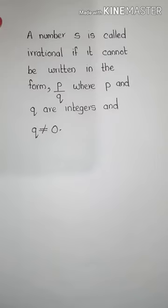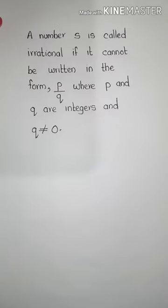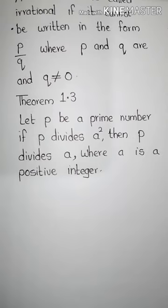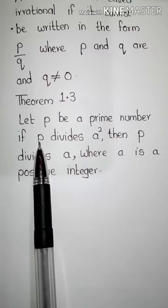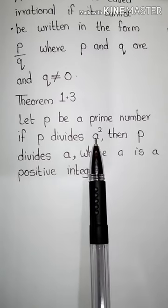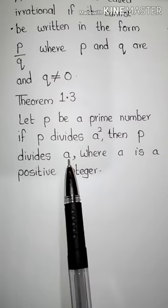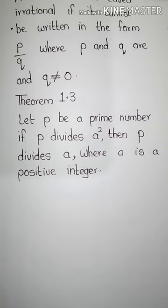Before proving a number to be irrational, let us look at the fundamental theorem of arithmetic. Let us start with Theorem 1.3. Theorem 1.3 states: let P be a prime number. If P divides A squared, then P divides A, where A is a positive integer. Let us see the proof of Theorem 1.3.